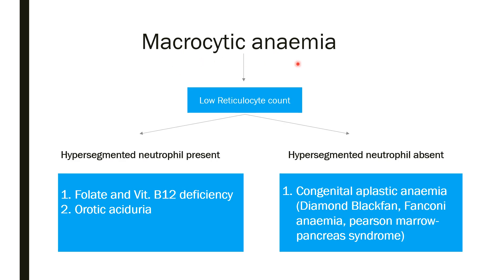Whenever there is a macrocytic anemia — MCV more than 100 fL — with low reticulocyte count, go for the peripheral smear. If the peripheral smear shows hypersegmented neutrophils, it can be due to folate or B12 deficiency, or orotic aciduria. If hypersegmented neutrophils are absent, then it is a congenital aplastic anemia — it can be Diamond-Blackfan, Fanconi, or Pearson-Marrow-Pancreas syndrome.